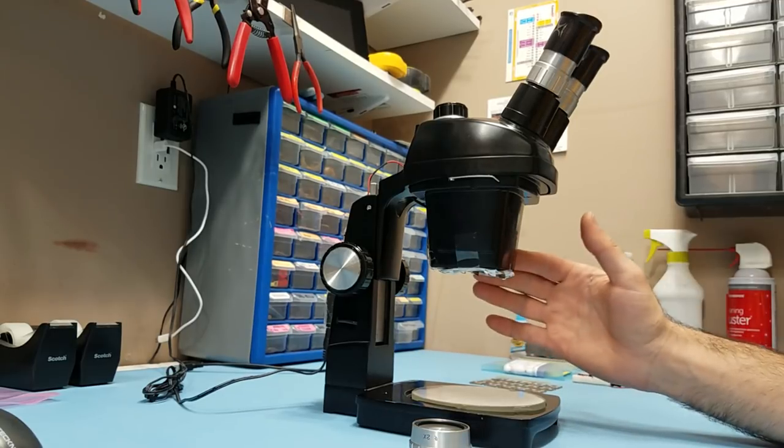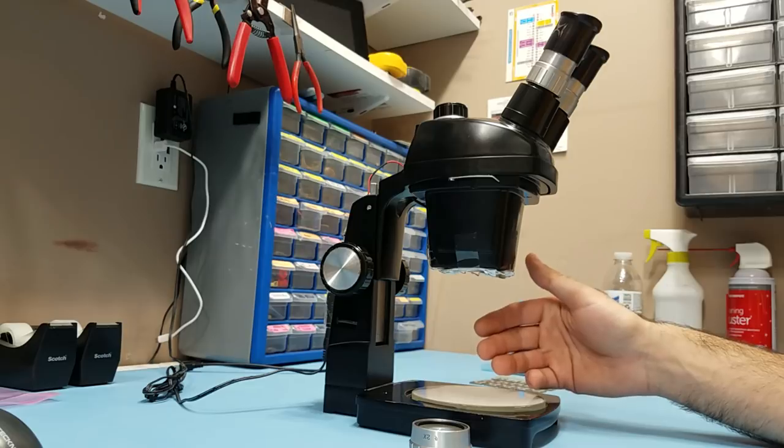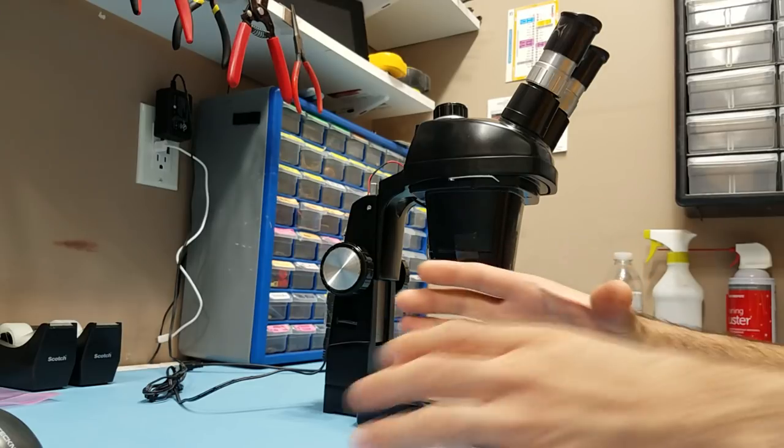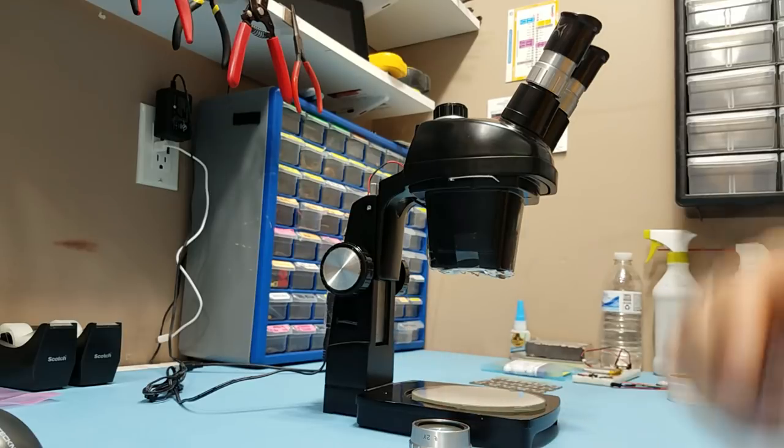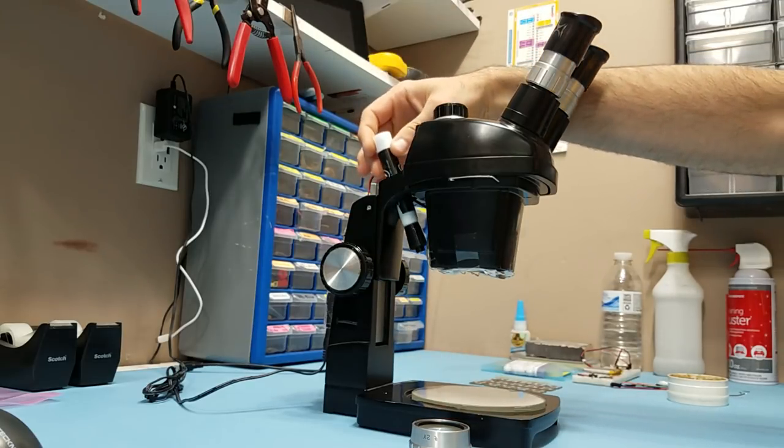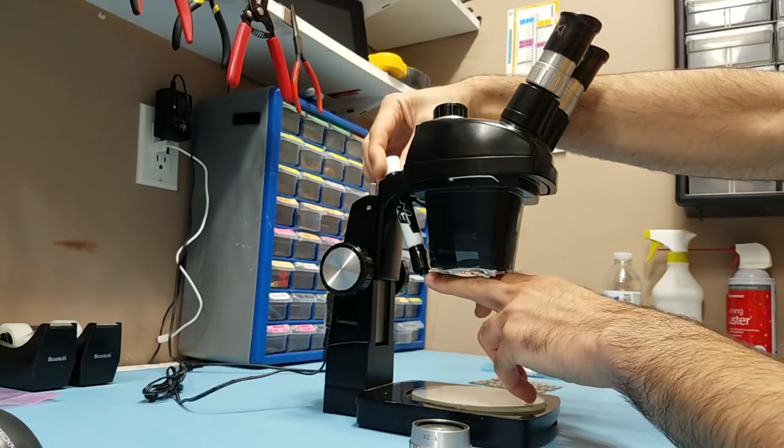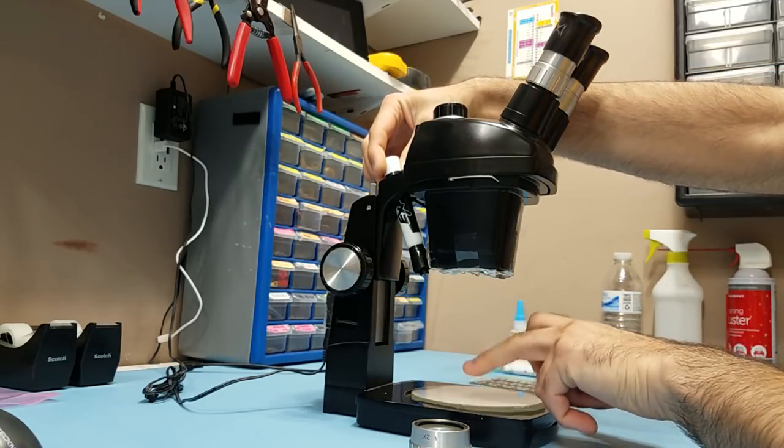Every such microscope will need some kind of good light source to make it useful. The OEM light for this type of scope is this bulky power supply along with this weird looking light stick that is mounted here in the back of the unit and provides an incandescent spotlight on the work piece.